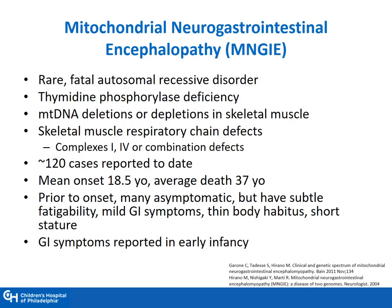MNGIE is a rare, fatal autosomal recessive disorder that occurs secondary to thymidine phosphorylase deficiency. There are mitochondrial DNA depletions or deletions in skeletal muscle, and it affects complexes 1, 4, or a combination thereof. Approximately 120 cases have been reported to date, with mean onset of age approximately 18.5 and average age of death at 37. Prior to onset, many patients are asymptomatic but can have mild GI symptoms, including thin body habitus and short stature.